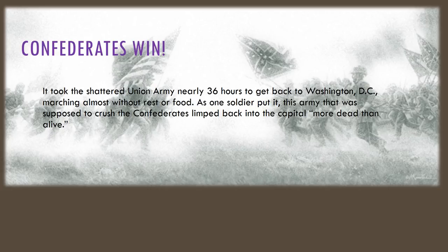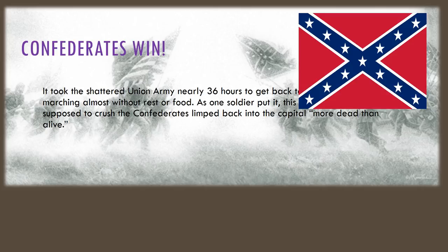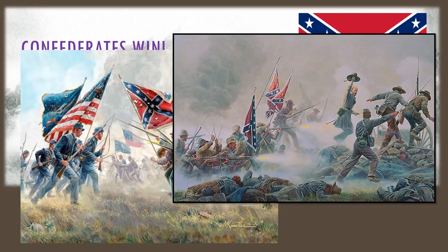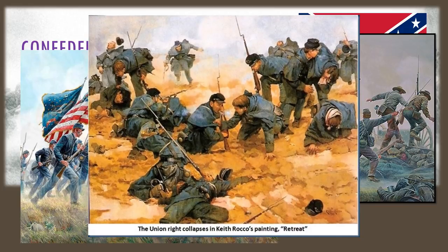The Confederate army eventually wins this battle and pushes the Union army back into Washington DC. After heavy fighting all day long, the Confederates had won and the Union were shocked at their loss. It took the shattered Union army nearly 36 hours to get back to Washington DC, marching almost without food or rest. As one soldier put it, this army that was supposed to crush the Confederates limped back into the Capitol, more dead than alive.